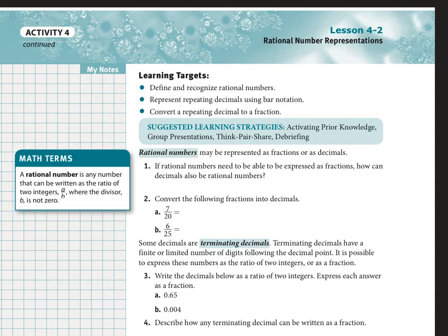All right guys, pre-algebra lesson 4.2 here, talking about rational number representation. In this section, we're going to be able to define and recognize rational numbers, represent repeating decimals using bar notation, and convert a repeating decimal to a fraction.